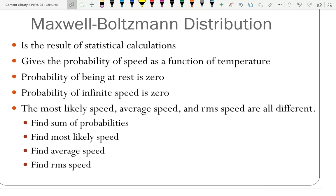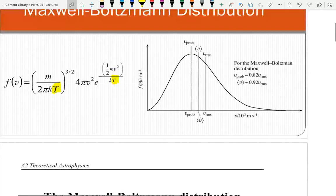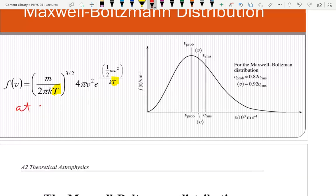The importance of the Maxwell-Boltzmann distribution: it's the result of statistical calculations — pure statistics is where it comes from. It gives the probability of speed as a function of temperature. What should the probability of being at rest be? Obviously zero, because you have all these things colliding — one may occasionally hit zero speed, but it's not going to stay there. And infinite speed, obviously zero. If we check the equation, we can verify those are what you get.